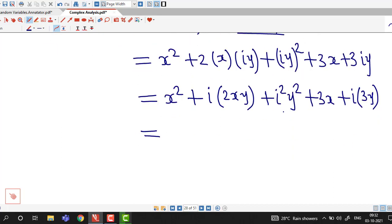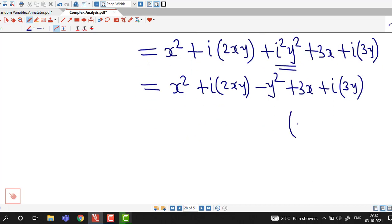Now we know that i square is minus 1, so we put i square equal to minus 1 and keep other terms as is. So here x square plus 2xy i minus y square plus 3x plus i into 3y.